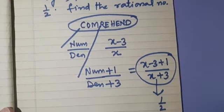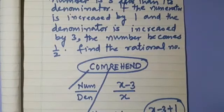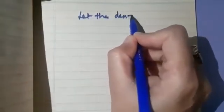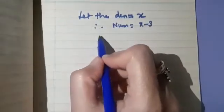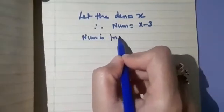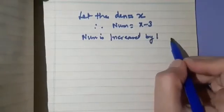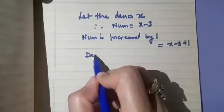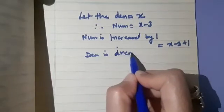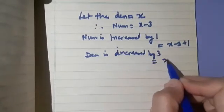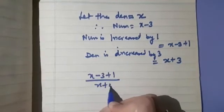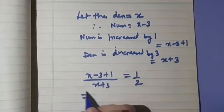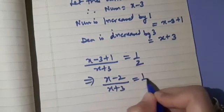Now let us write the solution formally. Let the denominator equal x. Therefore the numerator is x minus 3. When the numerator is increased by 1, we get x minus 3 plus 1, and the denominator increased by 3 gives x plus 3. According to the question, x minus 3 plus 1 upon x plus 3 equals 1/2, which simplifies to x minus 2 upon x plus 3 equals 1/2.